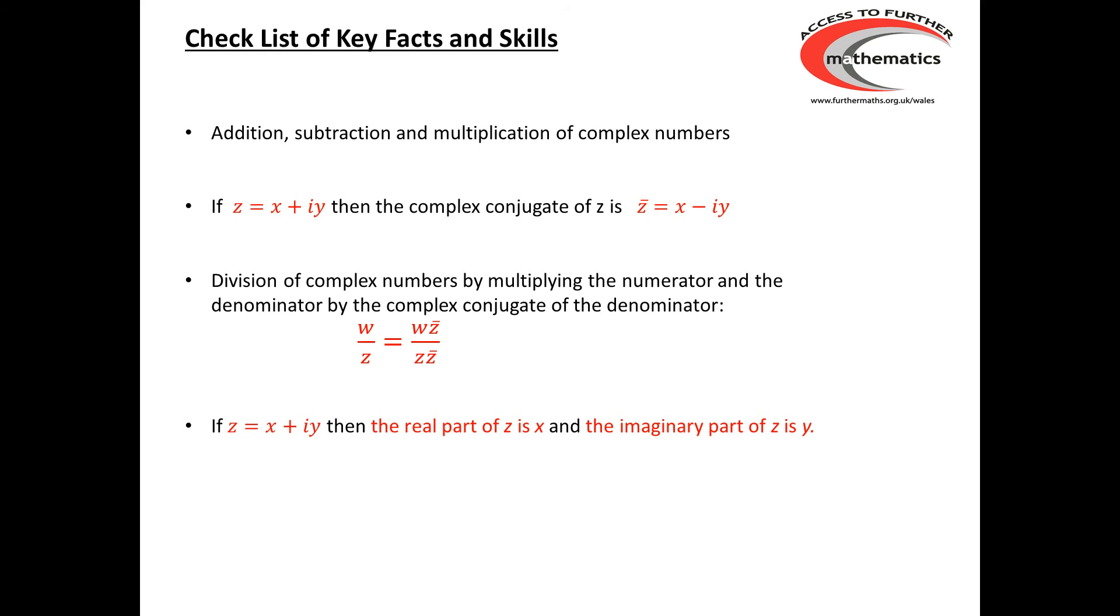We need to be aware of the language of what we mean by the real part of a complex number and the imaginary part of the complex number. And we also need to be aware that if we have two complex numbers that are equal to each other, then their real parts must be equal to each other, and their imaginary parts must also be equal to each other.